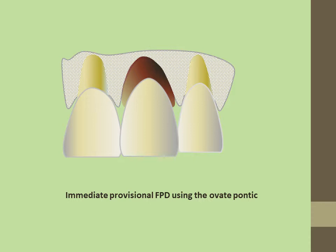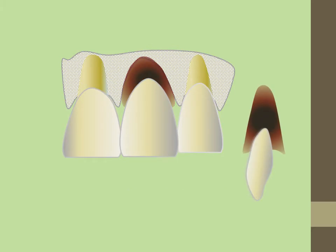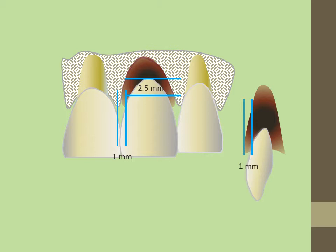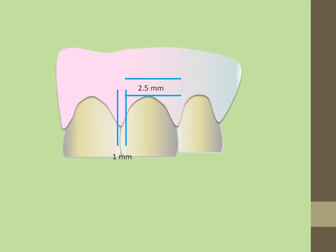The abutment teeth are prepared prior to the extraction. Socket preservation procedures are carried out, and the provisional restoration fabricated. The ovate Pontix should extend approximately 2.5 mm into the socket space, and be approximately 1 mm from the alveolar interceptal and facial bone.